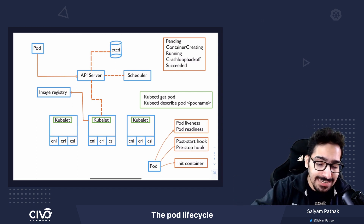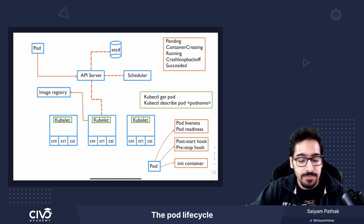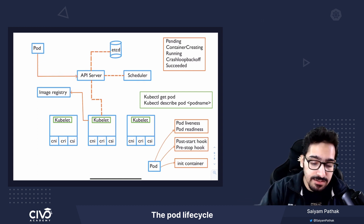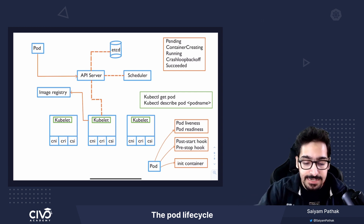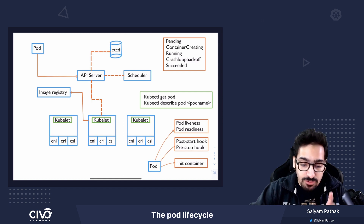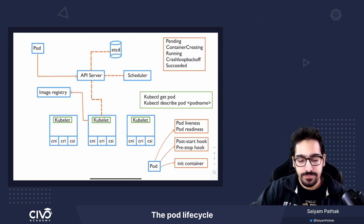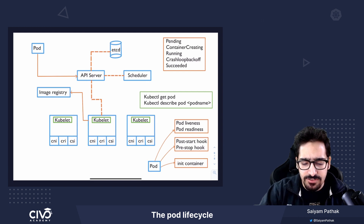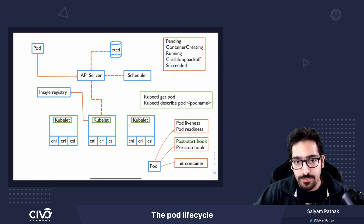It's first converted to JSON and sent to the API server. The request is authenticated using our kubectl credentials and then it's authorized — whether the user is actually authorized to perform this particular command to create a pod. And then if any admission controllers are there, they are checked before it gets persisted to the etcd datastore.